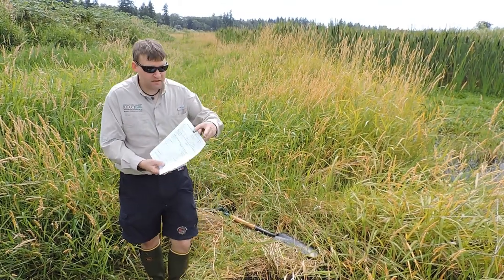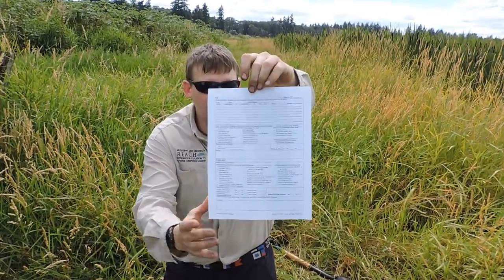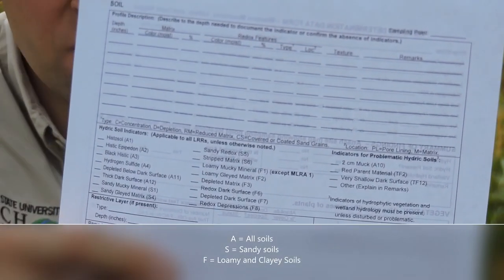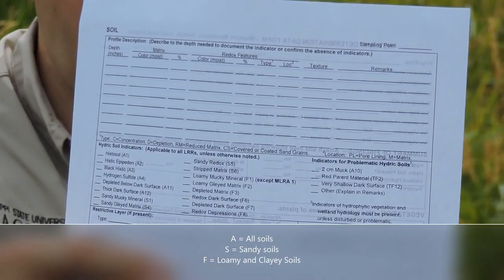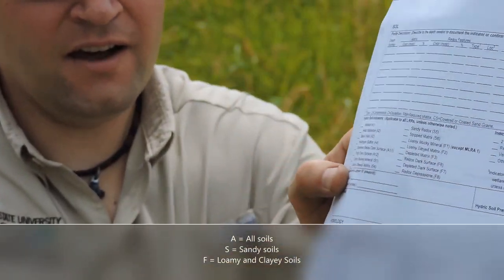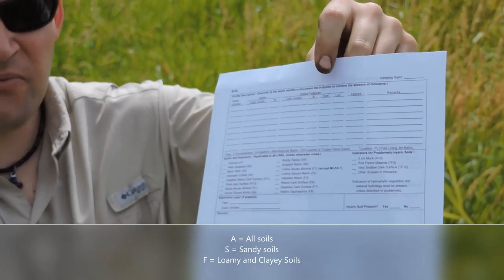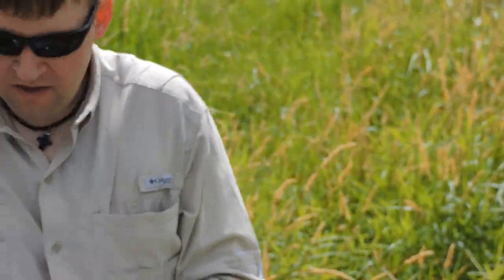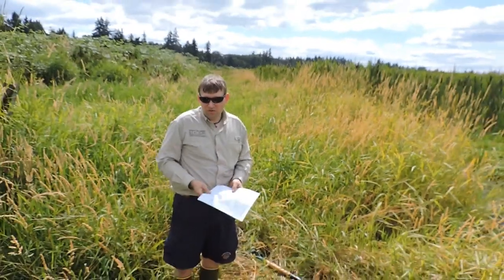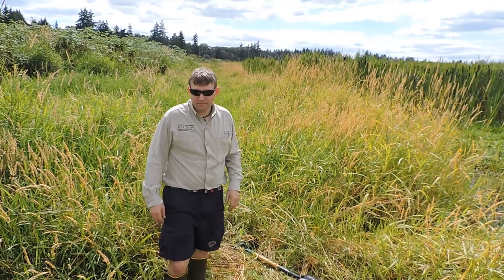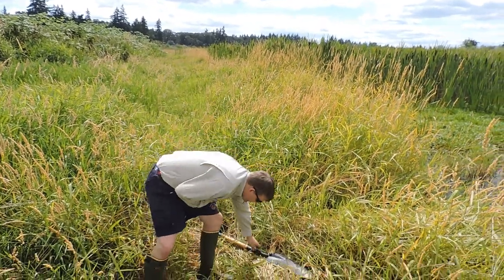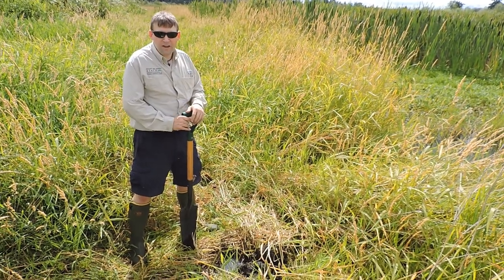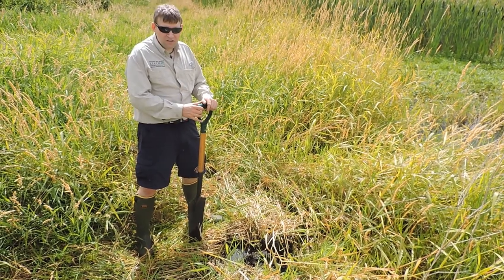Those indicators are listed on the backside of the wetland delineation data form up top. There are a lot of them. Remember that you have indicators for all soils, which have an A and then a number; S for sandy soils; and F for loam soils. We need to dig a soil pit in order to determine if we have hydric soil indicators. We dig the pit down to about 20 inches, and then we do some observations of the soil profile — soil color, soil texture, that type of thing.